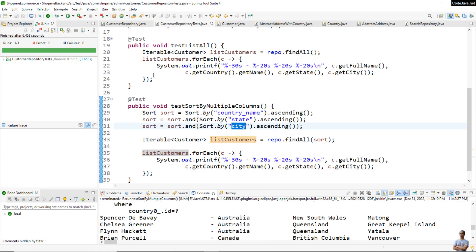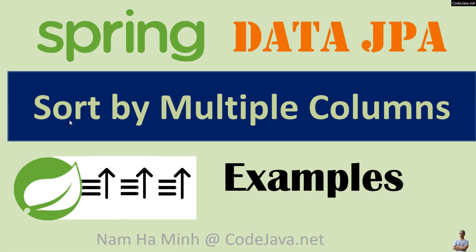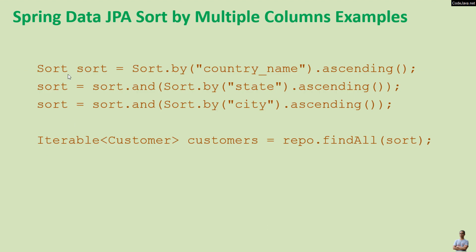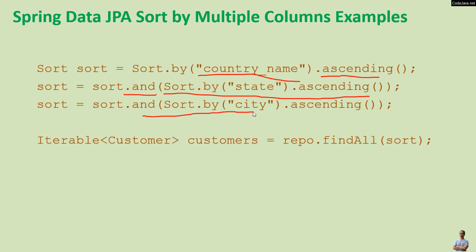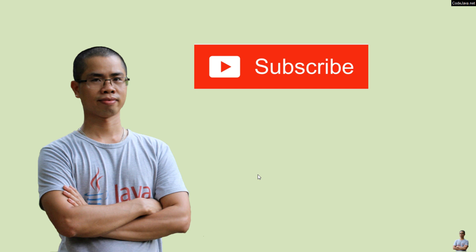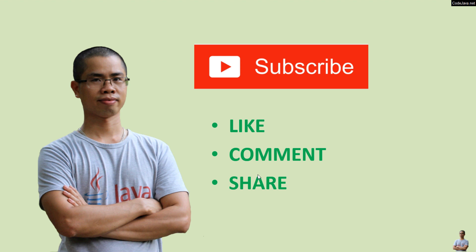That's how to use Spring Data JPA to sort a list of entities by multiple columns. The code is quite simple — you just create a Sort object, specify the field name and sort order, and to sort by multiple columns you use the .and() statement passing another Sort object. This code sorts the list of customers by country name, state, and city. I hope you found this video helpful — please subscribe to my channel, like, comment, and share. Thanks for watching.